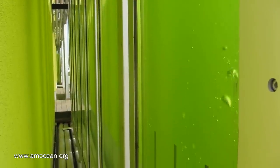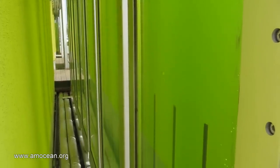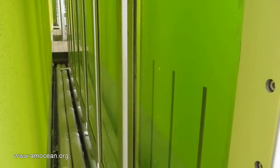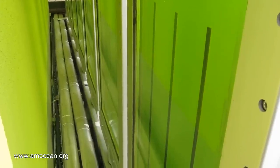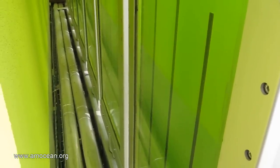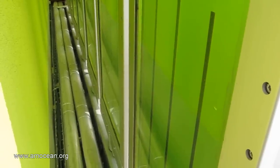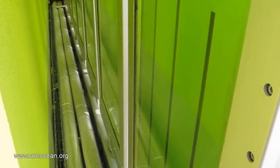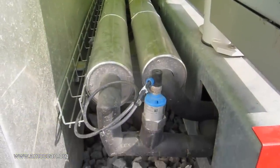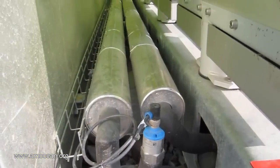The algae have to be permanently fed with carbon dioxide and culture medium and ventilated and mixed with pressurized air. This is done via the support tubes at the bottom of the panels. Via these tubes also the heat exchange and the harvesting of algae is happening.